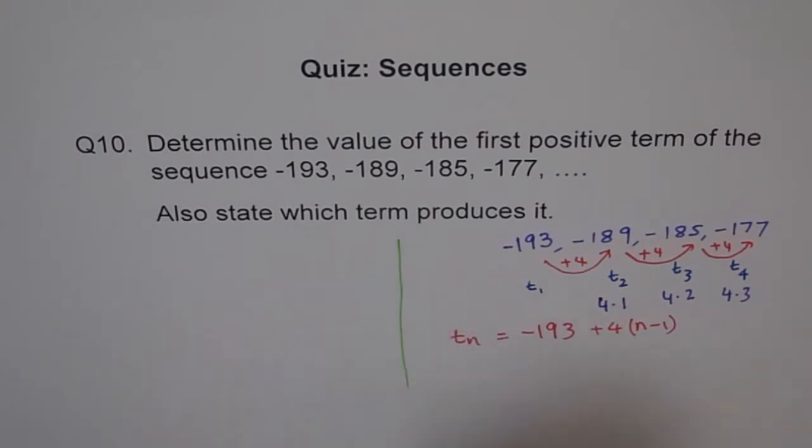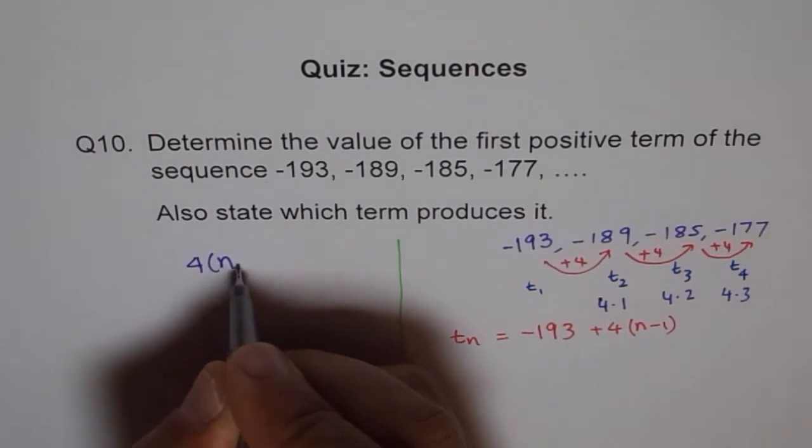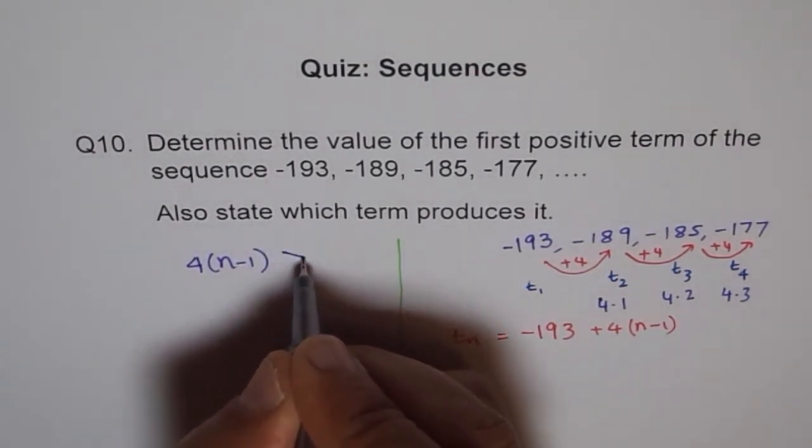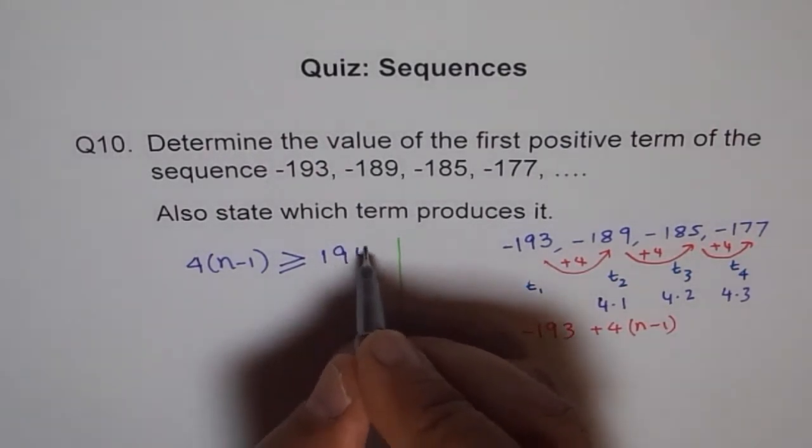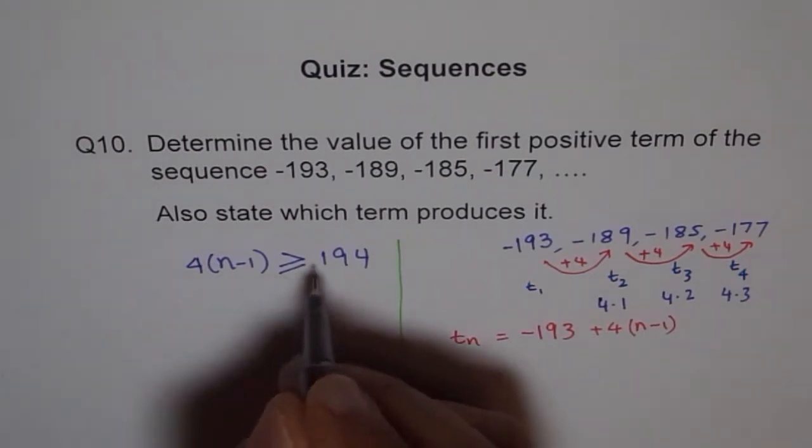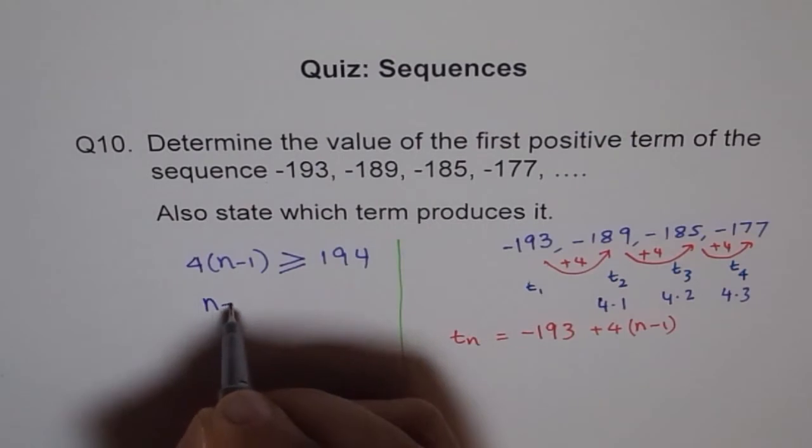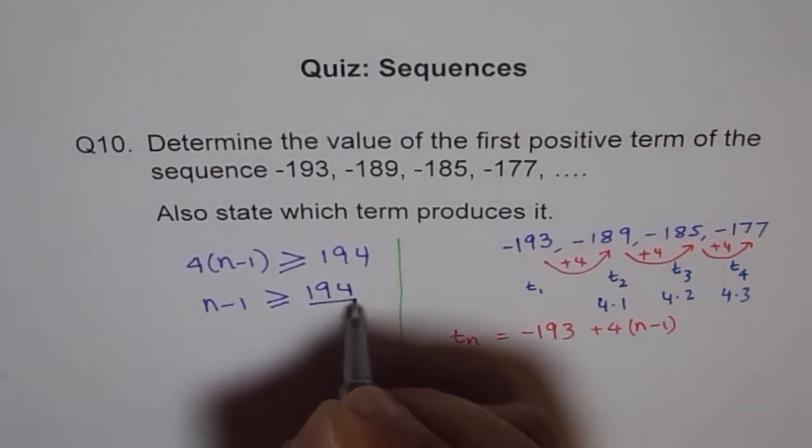So it is like coming from backwards calculation. So we say 4 times N minus 1 should be at least greater than equal to 194. If I do that, then if I add 194 to minus 193, it becomes positive. Let us divide by 4. So we say N minus 1 should be greater than equal to 194 divided by 4.